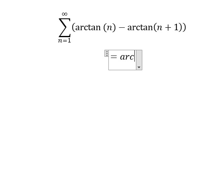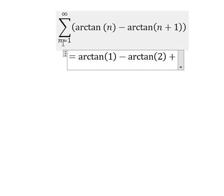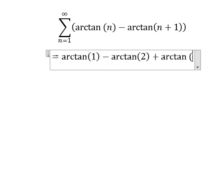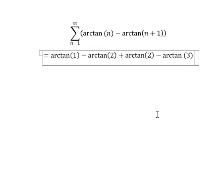So we have arctan of 1 minus arctan of 2. If I put n equals to 2 here and here, so we have arctan of 2 minus arctan of 3, and so on.